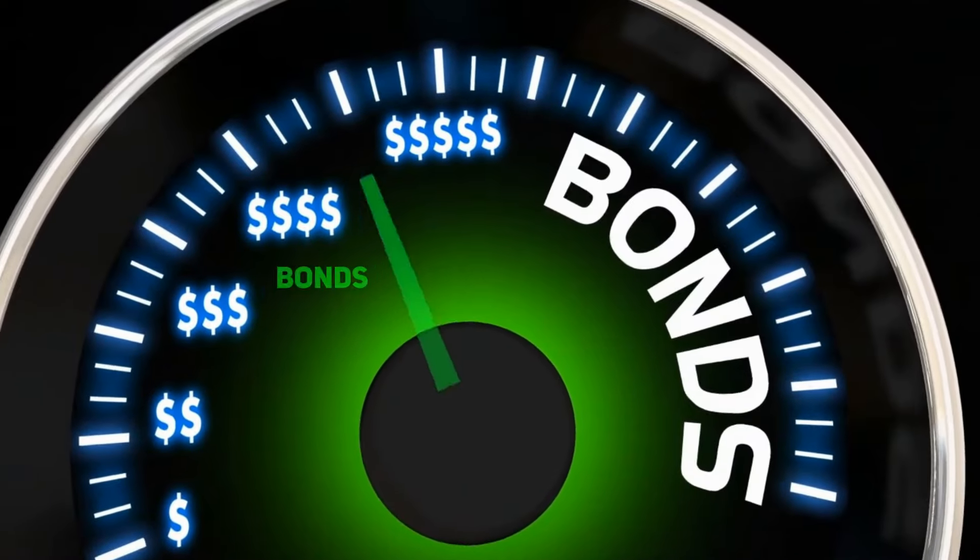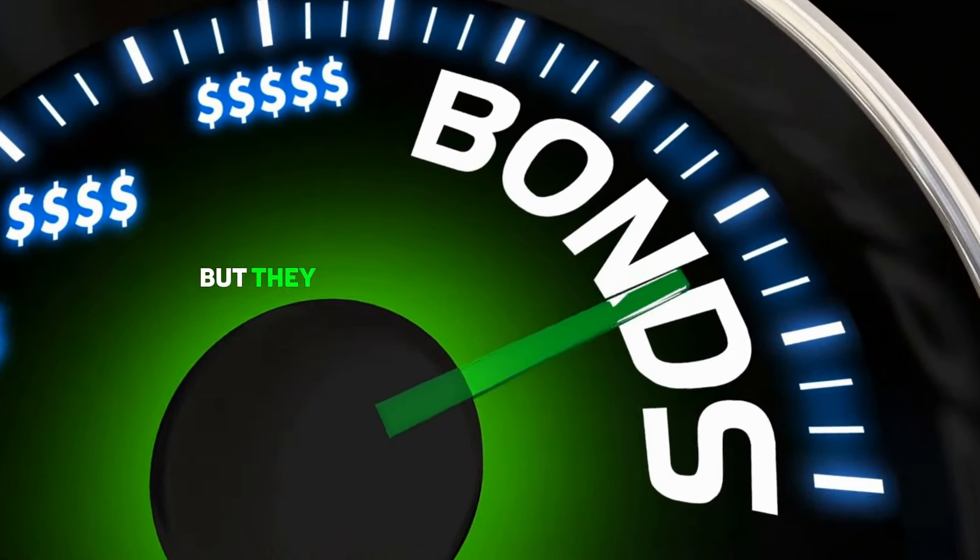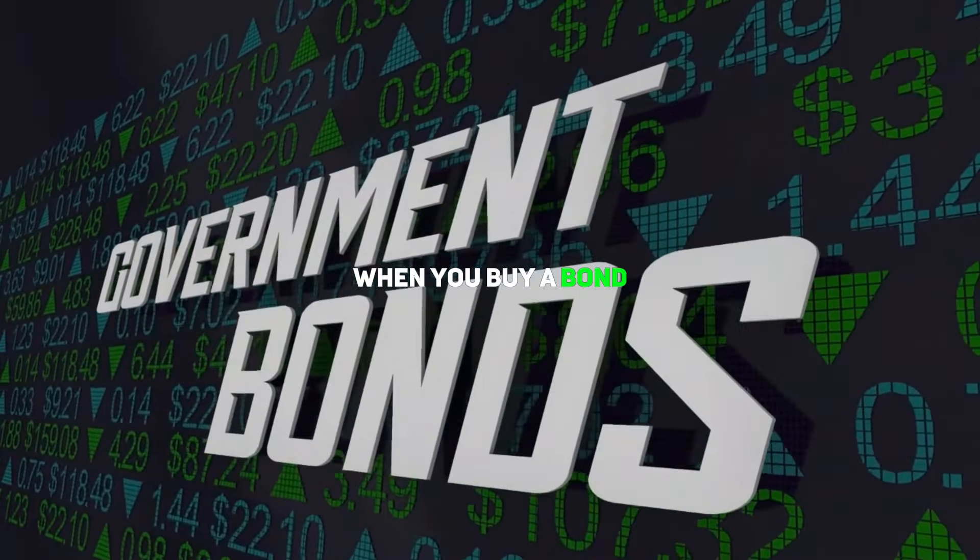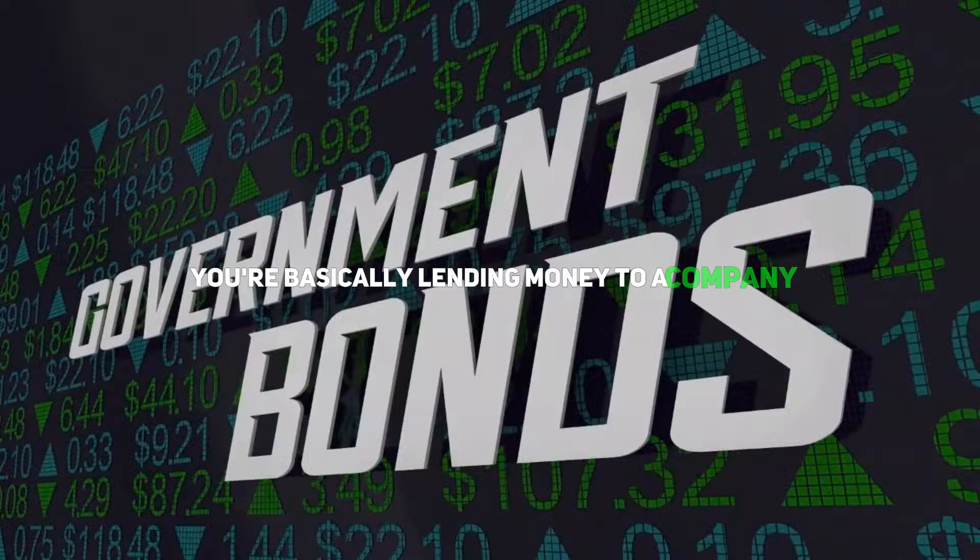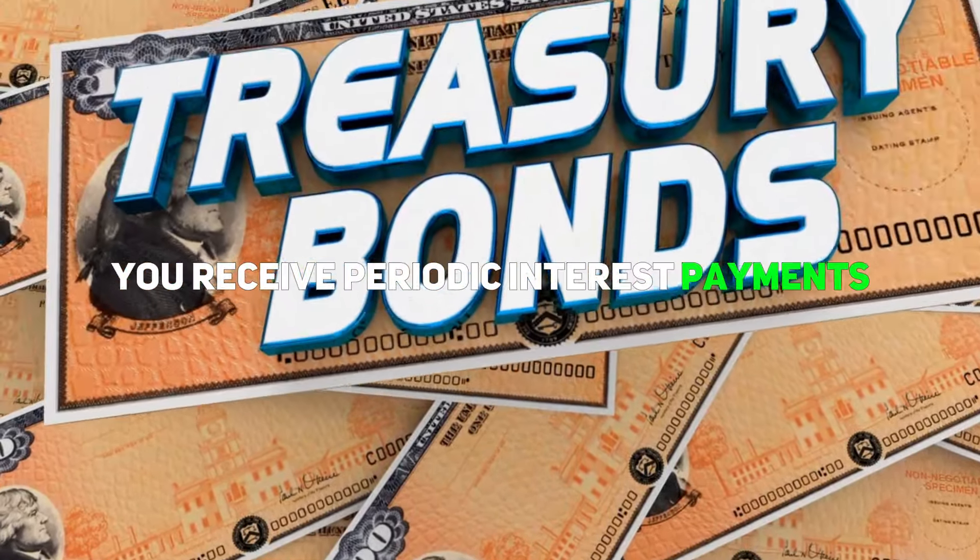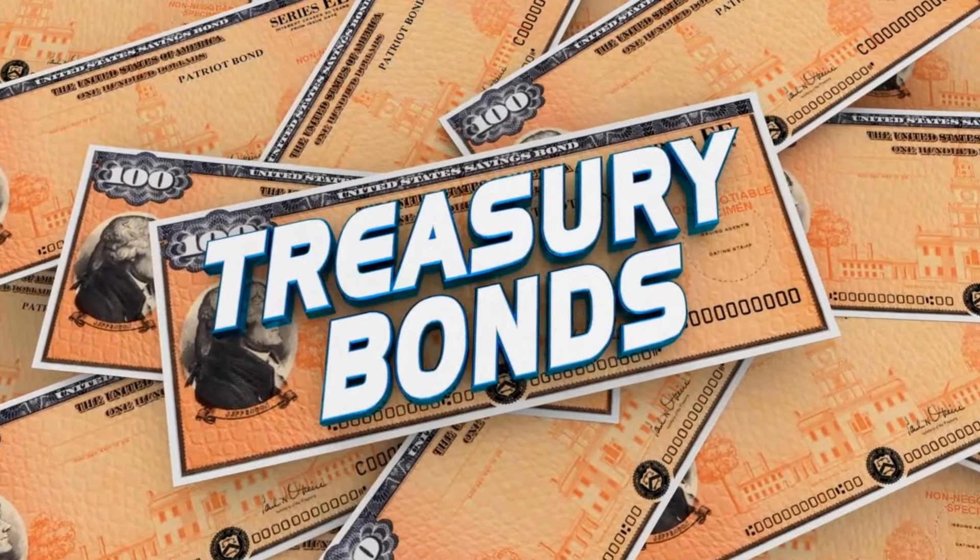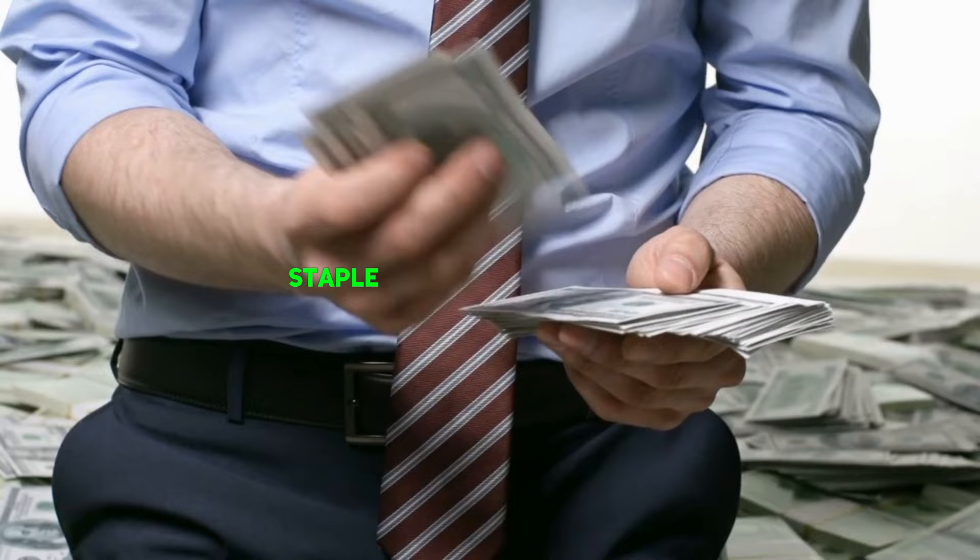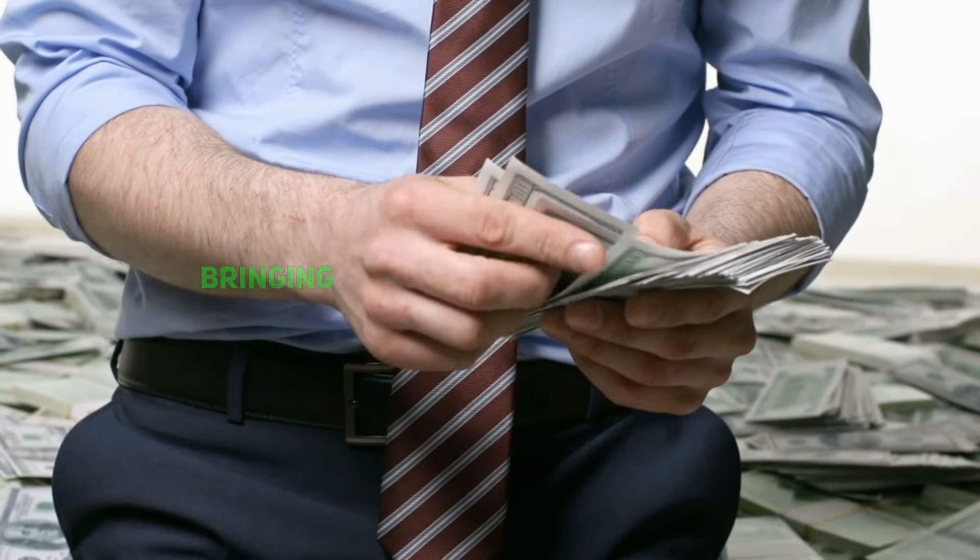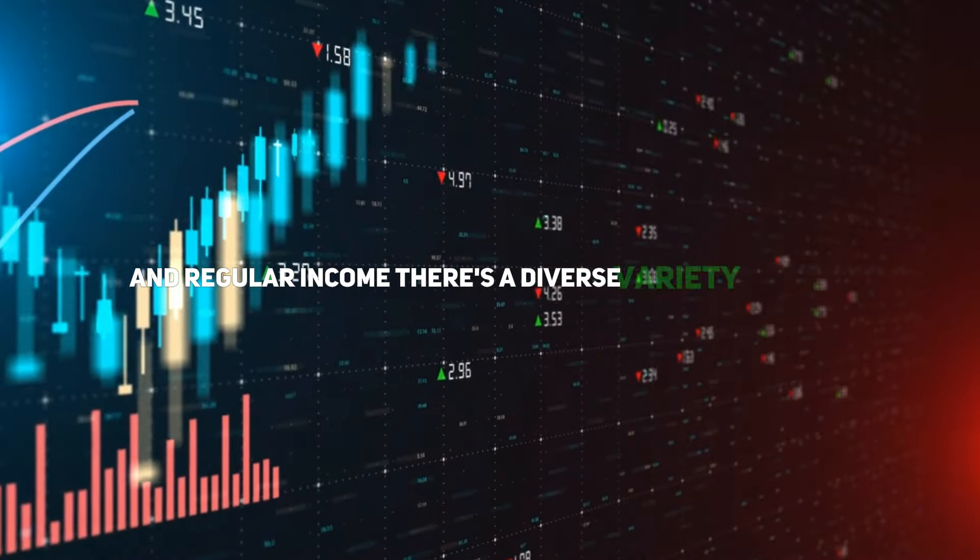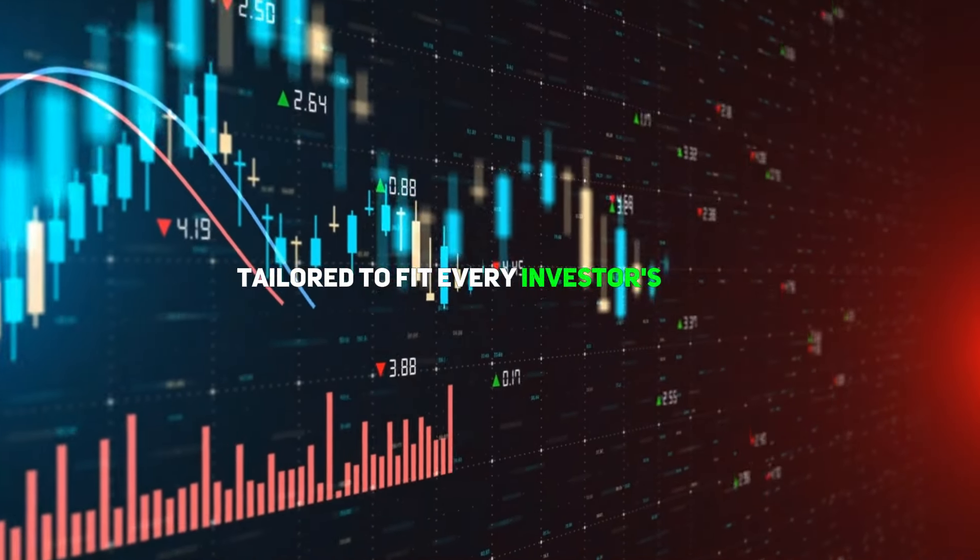Bonds. Moving on from stocks, we come to bonds. Bonds might sound complicated, but they can be understood simply as loans or IOUs. When you buy a bond, you're basically lending money to a company or a government. In exchange, you receive periodic interest payments, and once the bond matures, you get your original investment back. These characteristics make bonds a staple in balanced portfolios, bringing the twin advantages of stability and regular income. There's a diverse variety of bonds tailored to fit every investor's needs.